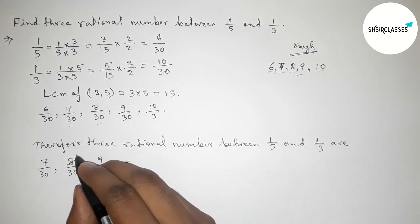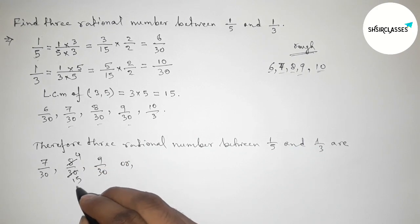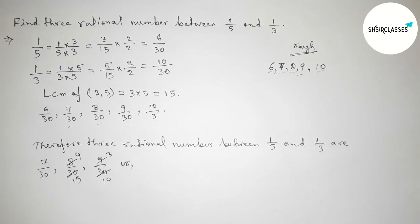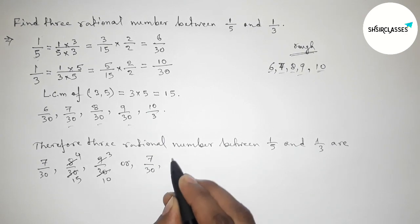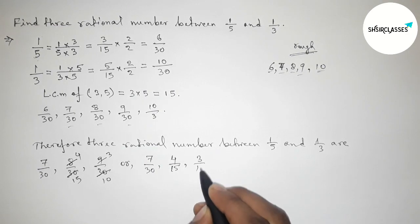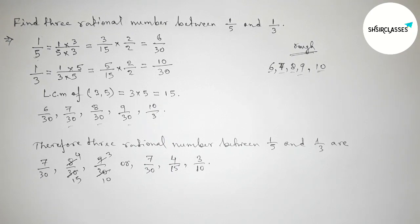Therefore the required three rational numbers between 1/5 and 1/3 are 7/30, then 8/30, then 9/30. Or we can write, if we divide both numbers by 2, then 4/15, and dividing both numbers by 3, then 3/10. So again writing the three rational numbers: 7/30, then 4/15, then 3/10. That's all, thanks for watching.